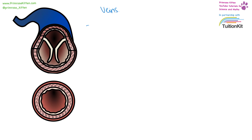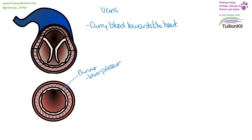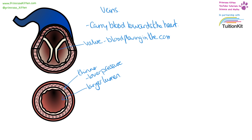Veins carry blood towards the heart. You will notice that the walls are much thinner. This is because the blood travels at lower pressure. It also means the lumen in the middle is much larger, which helps with the blood flow. Up here you will notice we have a valve, which is important for keeping blood flowing in the right direction.